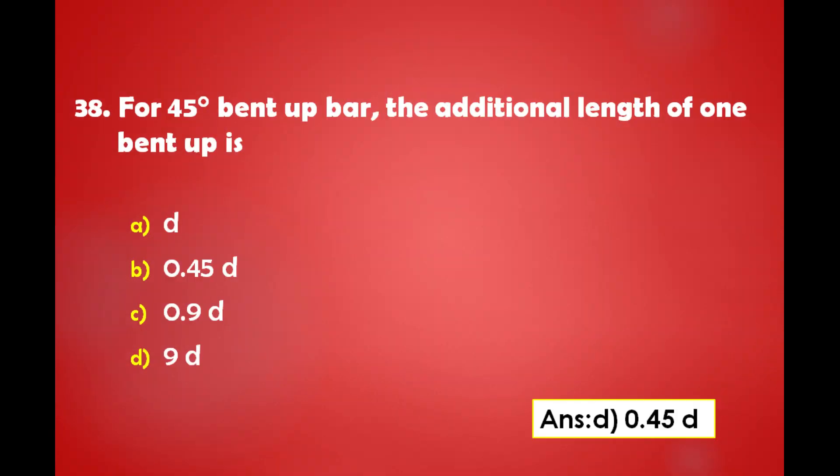For a 45-degree bend up bar, the additional length of one bend up is: a) D, b) 0.45D, c) 0.9D, d) 9D. The answer is: for a 45-degree bend up bar, the additional length of one bend up is 0.45D.